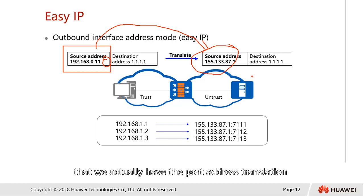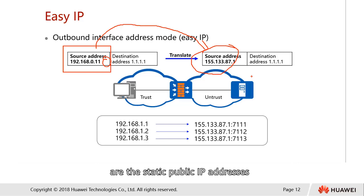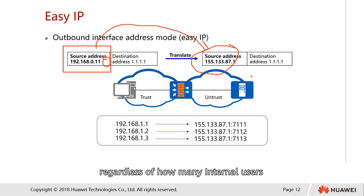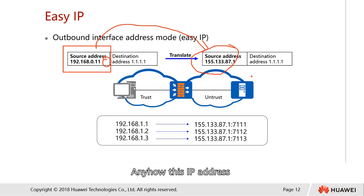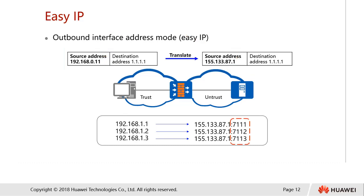Easy IP has port address translation applied. The difference between Easy IP and address pool mode with port translation is that for address pool mode, the public IP addresses are static public IPs already granted by the hosting provider, and users can only use addresses within the pool range. But for Easy IP, regardless of how many internal users you have, all of them are translated into a single public IP, which can be dynamic. This IP address will be the outbound interface IP.